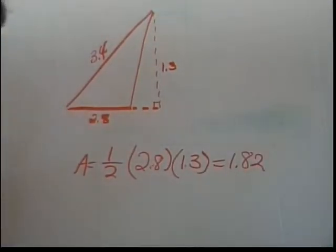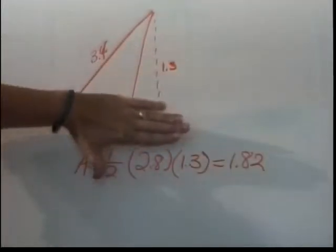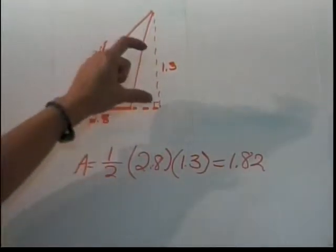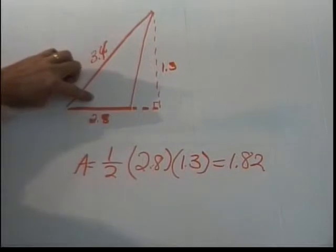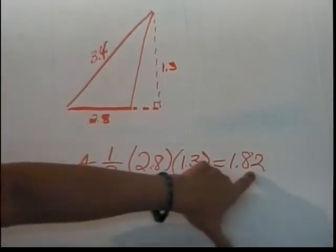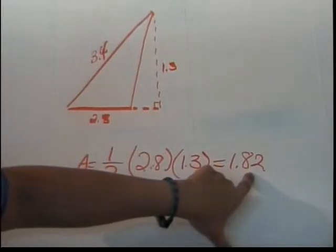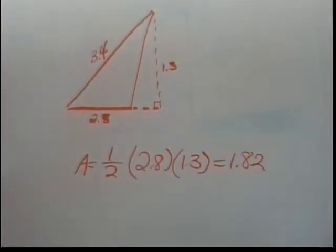Remember that when we're doing area, we're figuring out how many squares of one unit by one unit will fit in the triangle. And it's not always going to come out to be whole numbers. One whole square is going to fit, and 1.82 of another square. Now it'll probably be all broken up in order to fit into the triangle. Also keep in mind the triangle pictures in most of the pictures are not to scale.